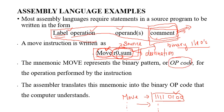Whenever an assembler translates an assembly language program to machine language, it converts the user-readable program to a binary representation. The opcode is the one which replaces the mnemonic during translation. Similarly, we have compilers that convert higher-level language to machine language program.